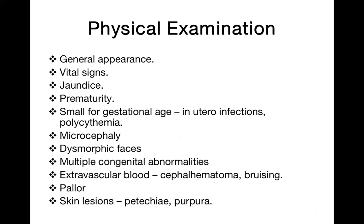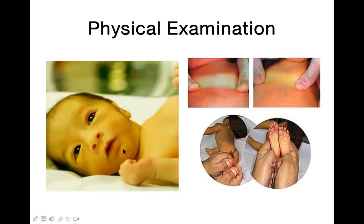On physical examination, always start with general appearance — whether the baby looks sick or active. Measure the five vital signs (the fifth being pulse oximetry). Assess how far the jaundice has spread. To examine jaundice, press firmly with a finger or stretch the skin — if the blanched area looks yellow, jaundice is present.